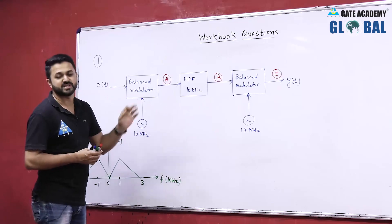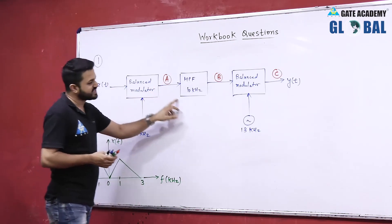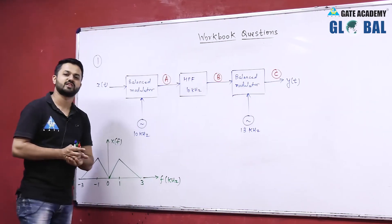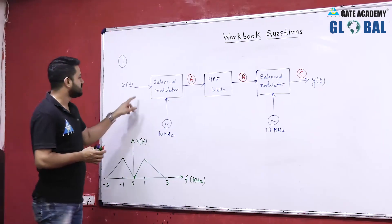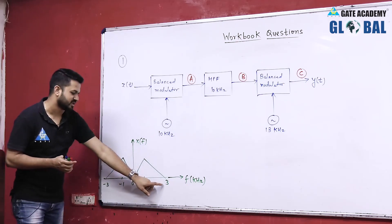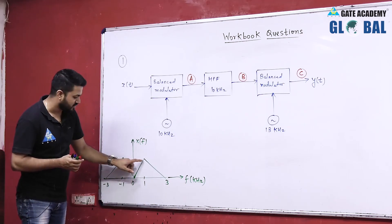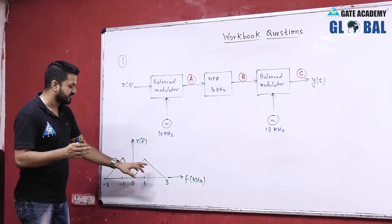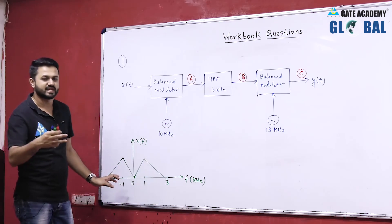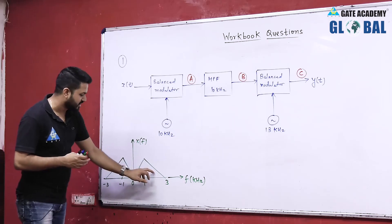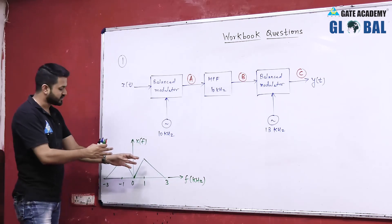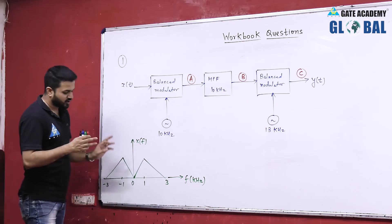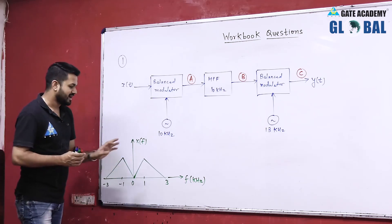X(t) has a Fourier transform X of f extended up to 3 kilohertz with a peak value at 1 kilohertz. The same frequency components will also be present on the negative side - the mirror image is present on the negative side. Whenever we draw this spectrum, we always take both the negative and positive parts of any spectrum.